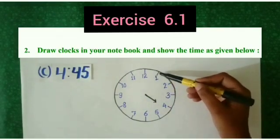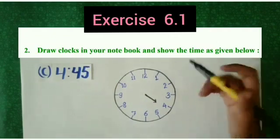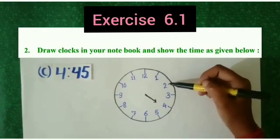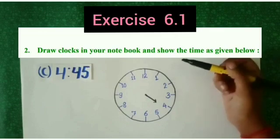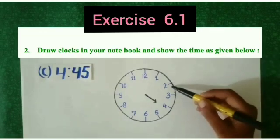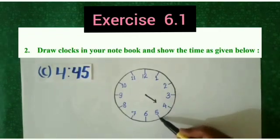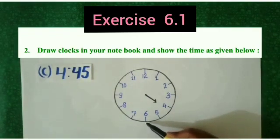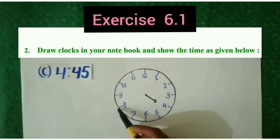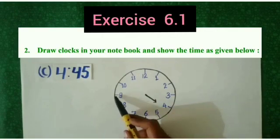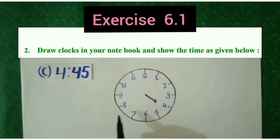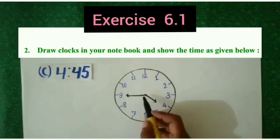Let us start counting minutes. 12 to 1, 5 minutes. 1 to 2, 5 minutes. 5 minutes plus 5 minutes is equal to 10 minutes. After 10, 15 minutes, 20 minutes, 25 minutes, 30 minutes, 35 minutes, 40 minutes, and 45 minutes. So students, to which number is this minute hand pointing? Yes, on 9. So we will draw minute hand pointing to 9.